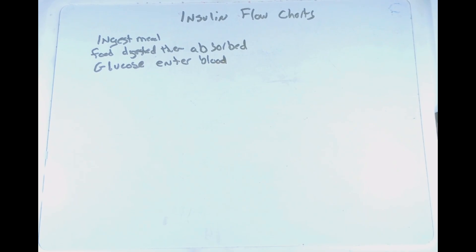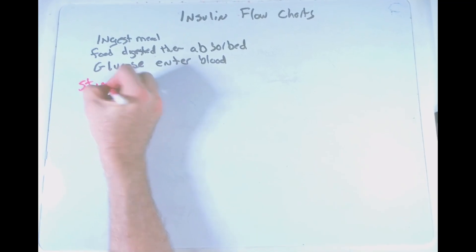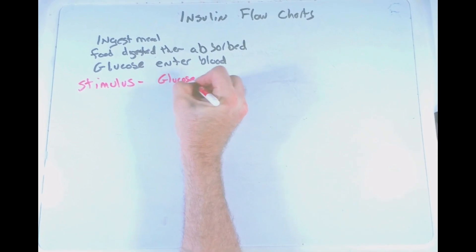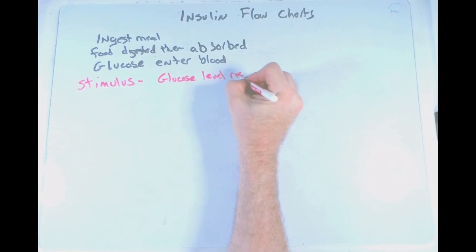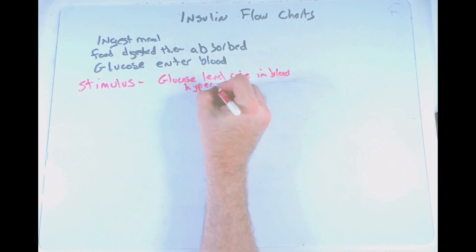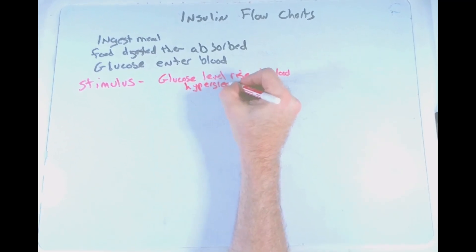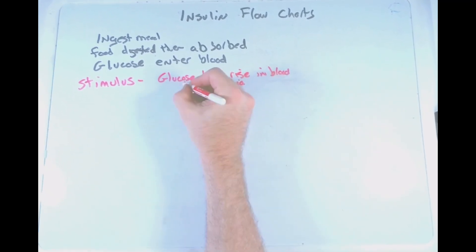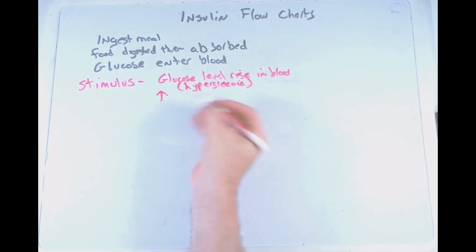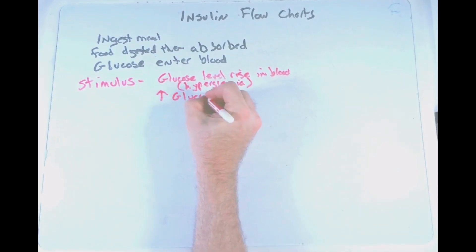Once glucose is absorbed by the small intestine, glucose enters the blood. At this point, we're going to identify the stimulus — and it's important when studying homeostatic processes that you're able to identify what the stimulus is. In this case, we're going to see that glucose levels rise in the blood, resulting in the situation of hyperglycemia. You can write this as words — 'glucose levels rise' — or use arrows to show an increase in glucose levels in the blood.